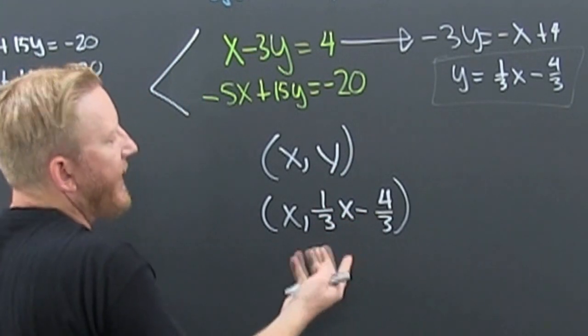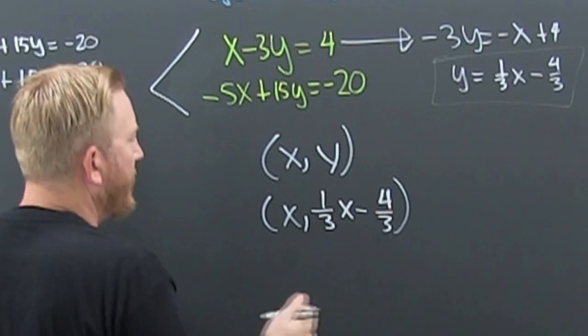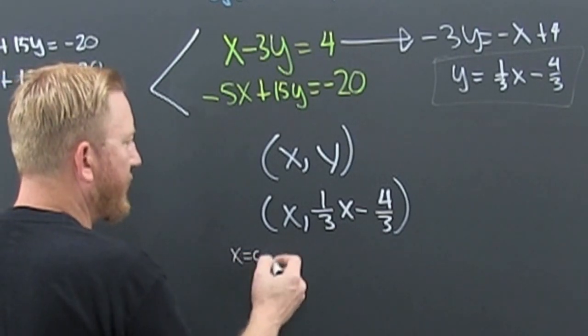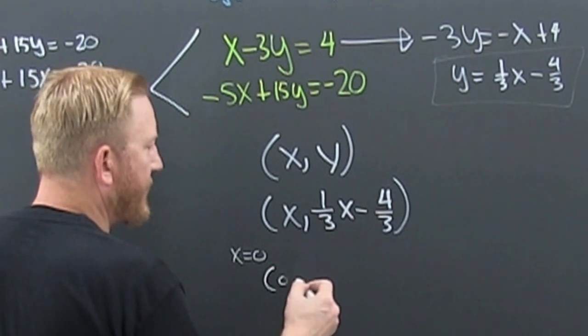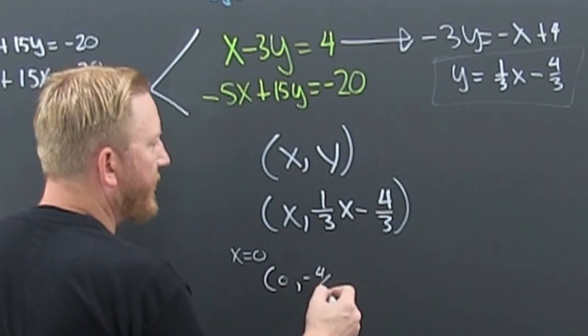All right, so like if my x was three... I guess I don't even have to use integers because those are in thirds. So let's just say x is equal to zero. Do I need to do this part? No, that's zero and minus four thirds.